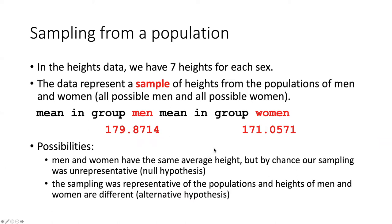When we are talking about an experiment like this, we are assuming that we are sampling from some sort of population. So we are only measuring seven heights of males and seven heights of females, but we're trying to draw some conclusion generically about the total population of males and females in the world. So these seven heights that we have are simply a sample from the populations of all men, all possible men and all possible women. And so our sample has produced an average of 179.8 for men and 171.0 for women.